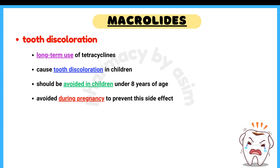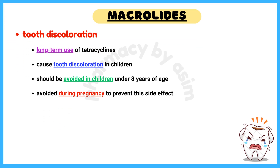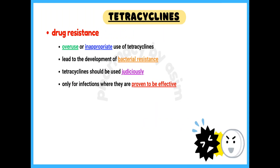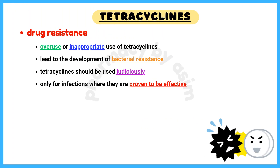Tooth discoloration. Long-term use of tetracyclines can cause tooth discoloration in children. They should be avoided in children under 8 years of age and during pregnancy to prevent this side effect. Drug resistance. Overuse or inappropriate use of tetracyclines can lead to the development of bacterial resistance. They should be used judiciously and only for infections where they are proven to be effective.